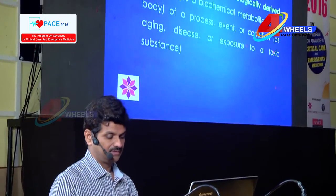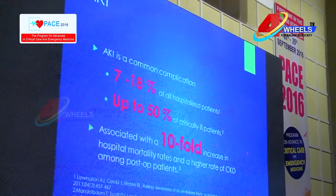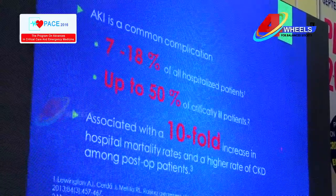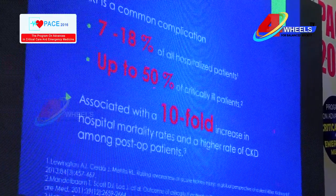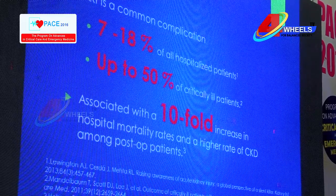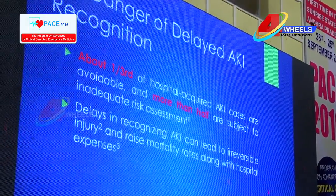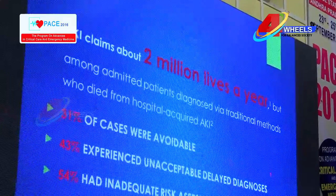Today I would like to give you an update about biomarkers in acute kidney injury. What is a biomarker? It's a distinctive biological or biologically derived indicator of a process, event, or a condition. Acute kidney injury is a very common complication, occurring in around 7-8% of hospitalized patients and up to around 50% of critically ill patients, carrying a very high mortality. One third of hospitalized AKI cases are avoidable, more than half are subjected to inadequate risk assessment, and it claims about 2 million lives a year worldwide.